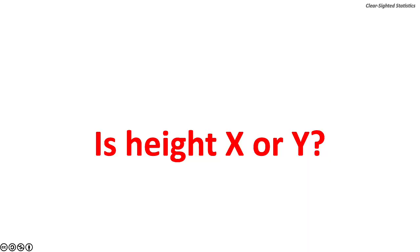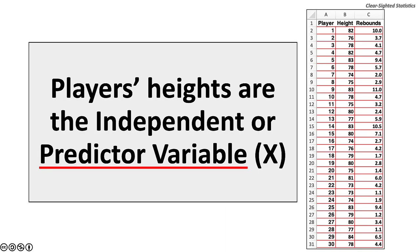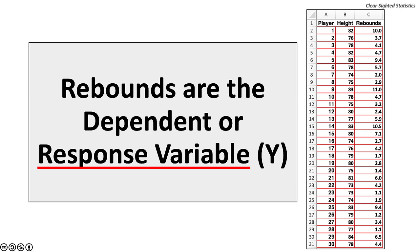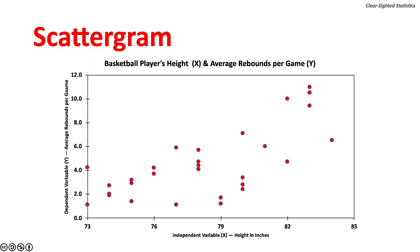Players' heights are the independent or predictor variable X, because players' heights predict rebounds. Rebounds are therefore the dependent or response variable Y. A scattergram shows the XY measures of players' heights and average rebounds per game. While the least squares line has not been drawn, it is clear from the distribution of dots that as players' heights increase, so do rebounds per game.